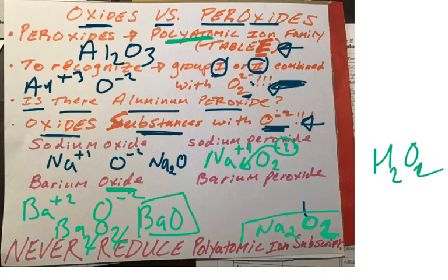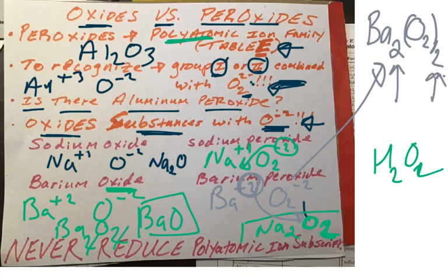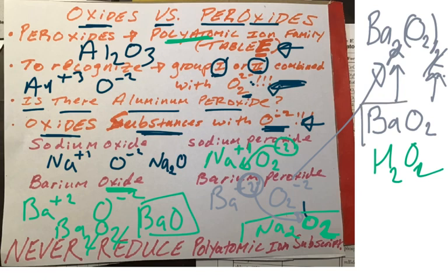So let's do barium peroxide. Barium peroxide will be Ba plus two combining with O₂ minus two. The overall formula from crisscrossing will be Ba₂(O₂)₂. Remember, if the subscript is two or higher, you have to put parentheses around a polyatomic ion. Now, can you reduce this two and this two? Absolutely — both twos go away, and the final formula for barium peroxide is simply BaO₂. Comparing with barium oxide, which is BaO, there you go.